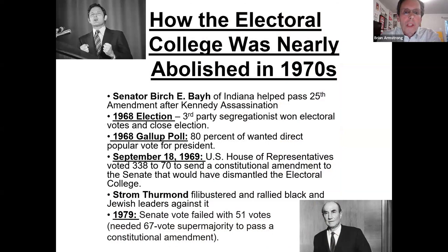Birch Bayh of Indiana was the big force behind abolishing the Electoral College, and he also was behind the 25th Amendment after the Kennedy assassination. He wanted to amend the Constitution to make it a direct popular vote for president. Strom Thurmond filibustered because he felt this would affect states' rights, and got a group of Black and Jewish leaders to ally with him, stopping it from passing in 1979. This was the one time it got close to going away.